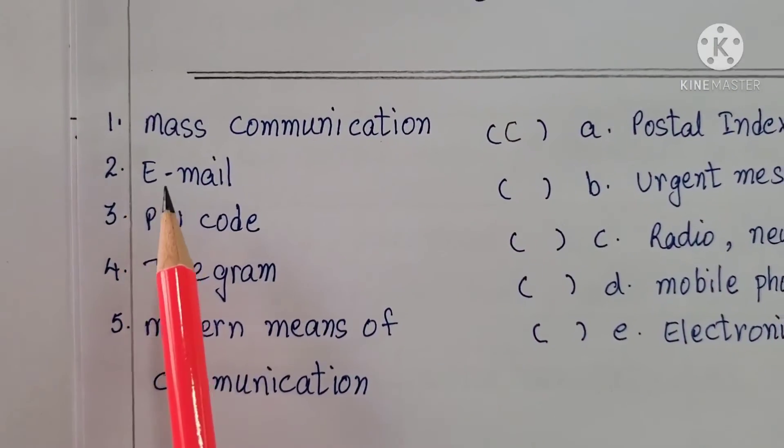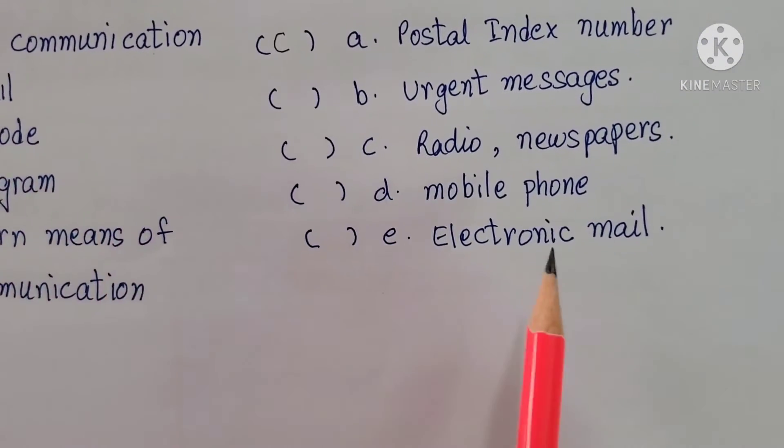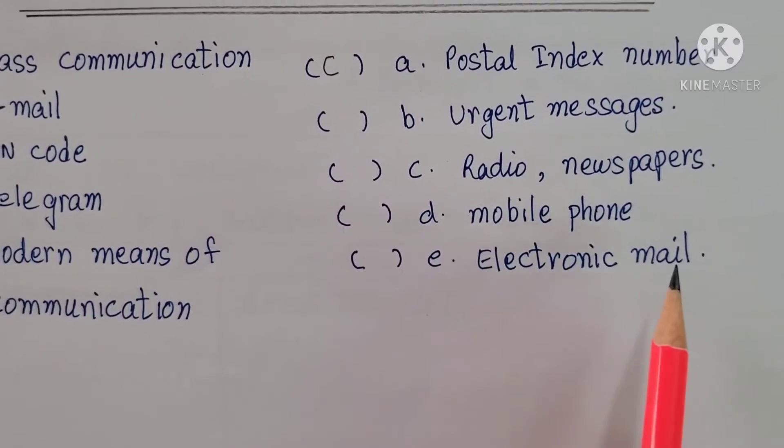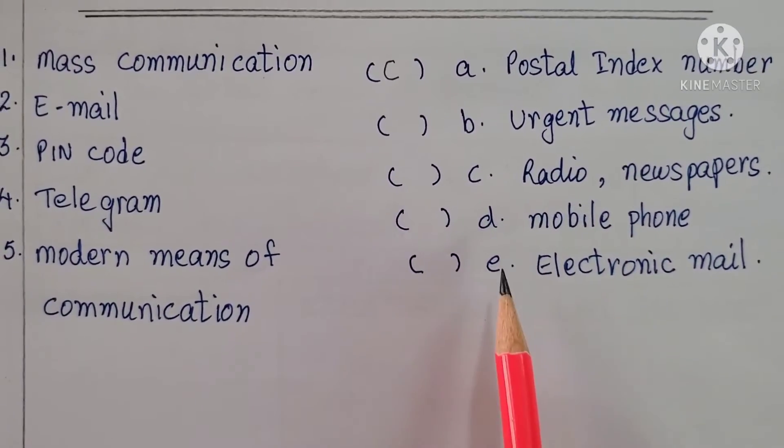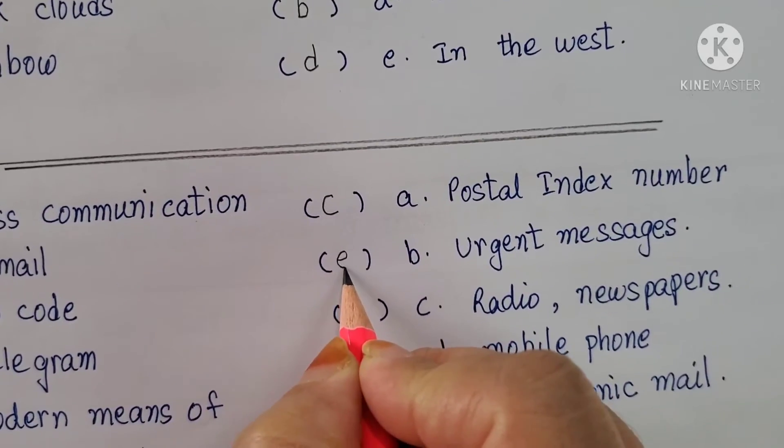Second one. Email. What is email? Electronic mail. What is email? Electronic mail. So which alphabet comes here? E. So you need to write here E.